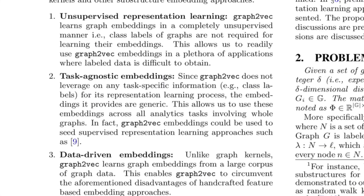The authors also mention key advantages of their approach. The first is that it is unsupervised in nature, meaning you do not require any class labels at the graph level for learning the embeddings. This is similar to word2vec, where you don't have hand-curated labels for every word — rather you create them based on a windowing technique. So it can be thought of as self-supervised, but it falls more or less under the unsupervised category.